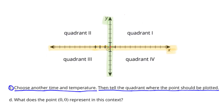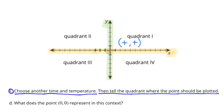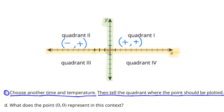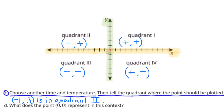C. Choose another time and temperature, then tell the quadrant where the point should be plotted. A positive time and positive temperature → Quadrant 1. A negative time and positive temperature → Quadrant 2. A negative time and negative temperature → Quadrant 3. A positive time and negative temperature → Quadrant 4. For example, the coordinates (-1, +3) would be plotted in Quadrant 2 — move left one unit, then up three units.